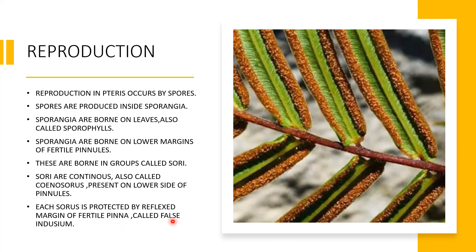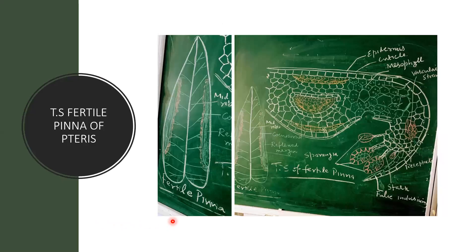This is the fertile pinna — fertile pinna means the pinna on which sporangia or groups of sporangia are borne, which is called a coenosorus. We can see the sorus part, and because this sorus is continuous it is called a coenosorus.